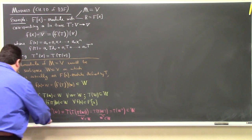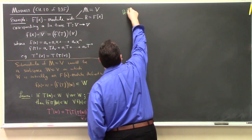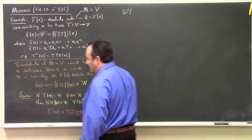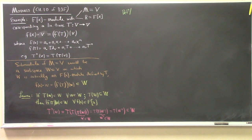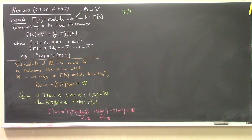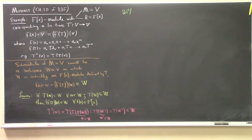We have a couple of goals going forward. One goal is to gain an introductory understanding of what a module is and basic module theory. Another goal is to understand how that interlaces with our theory of vector spaces and linear algebra — how it's different, how it's the same, and what we can learn about vector spaces from this study. That's roughly chapter 11.